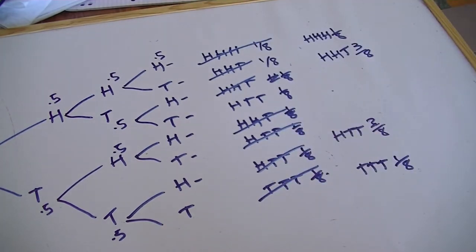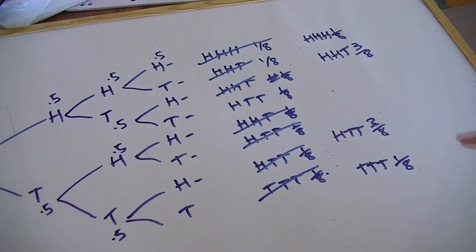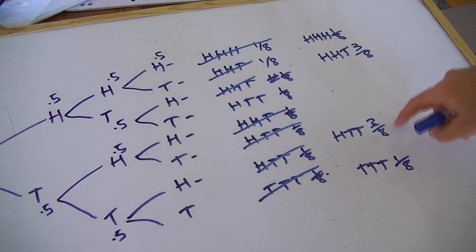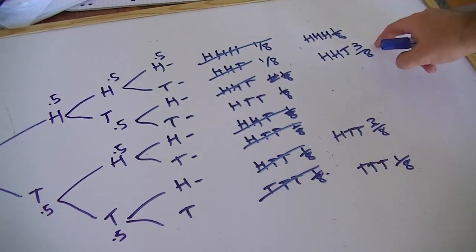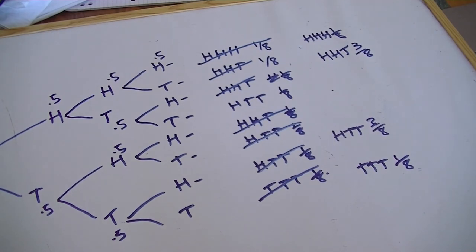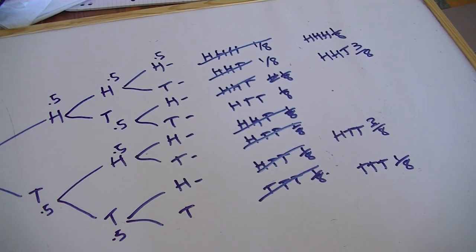This is how we map out all of the possibilities and work out how likely each outcome is. If I was betting on the outcome of tossing a coin three times, I'd probably bet on heads-tails-tails or heads-heads-tails because they are more likely than the other two. You could do this for dice or cards — I hope this has been useful.